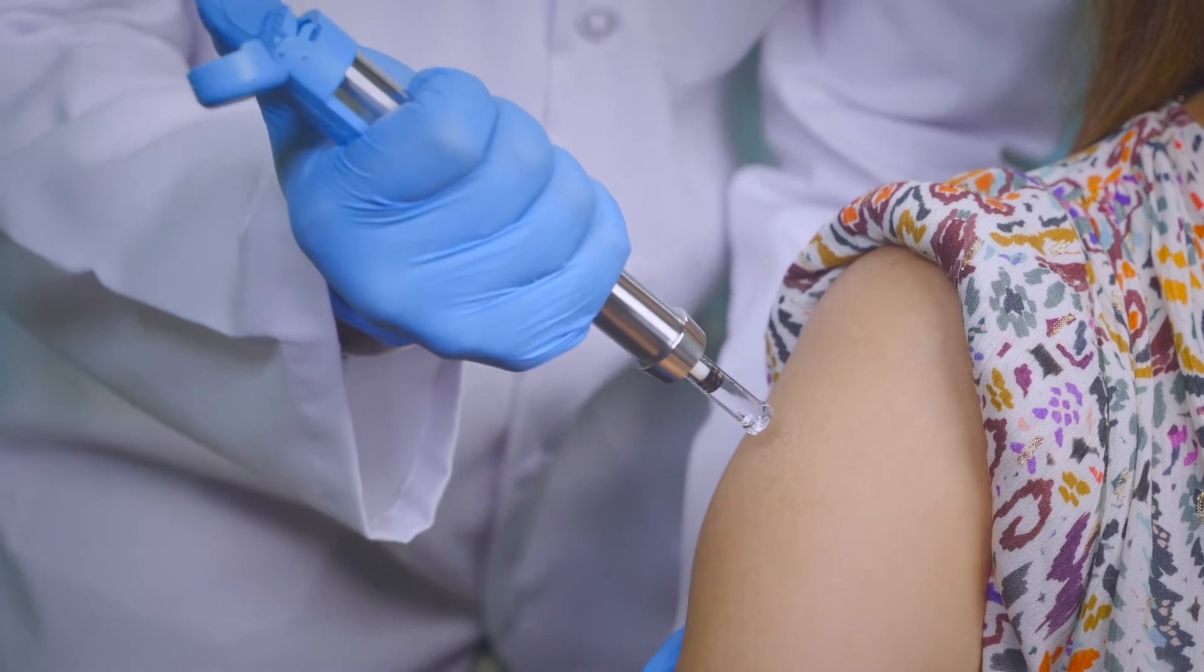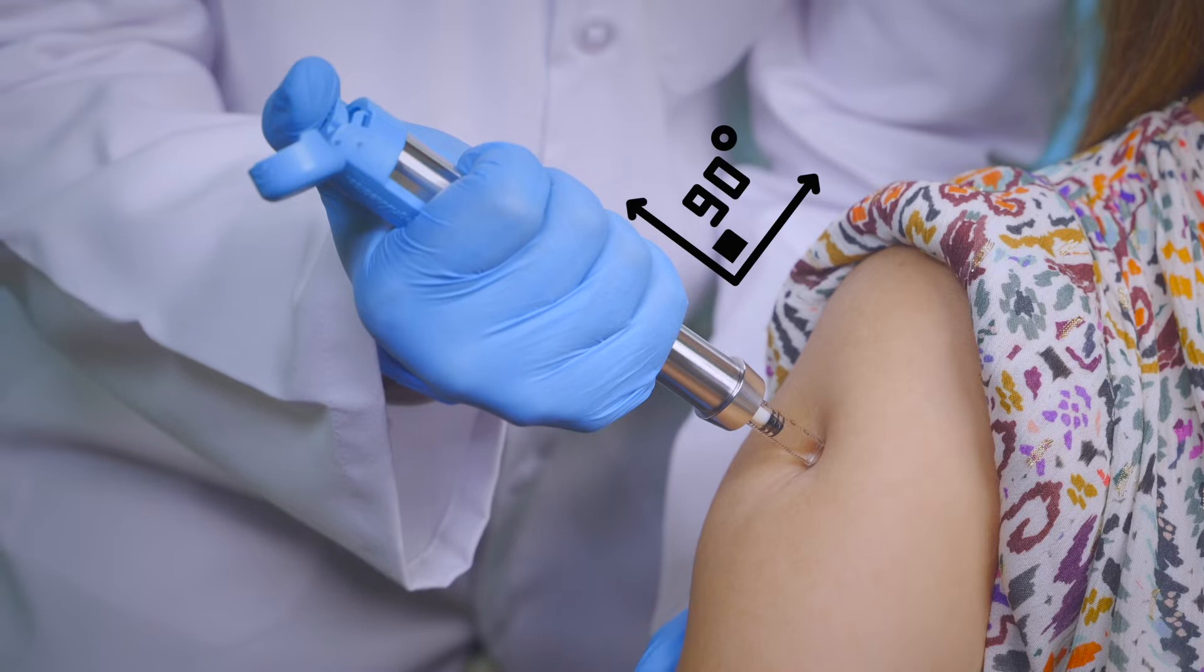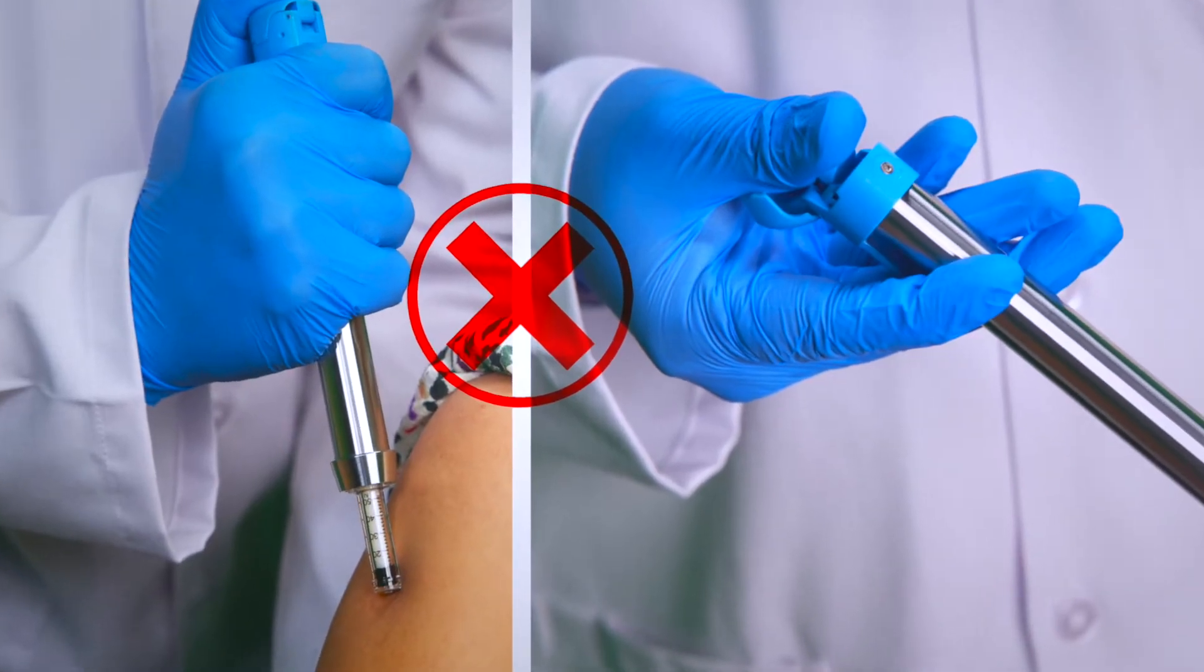It is important to position the NFIS device at a 90-degree angle to the injection site. Do not hold it at any other angle to avoid spillage.